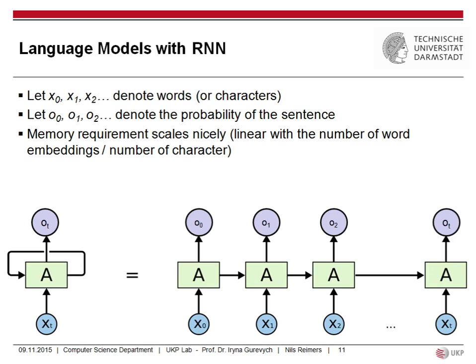When you build a language model with a recurrent neural network, X0, X1, X2 denote the words - or you can also work on characters, which is more typical in this domain. You set as output the probability of how likely the sentence is. At every state you predict how likely the sentence is based on training data. What's nice is that your memory requirement scales linearly with the number of word embeddings or characters, giving a fixed memory requirement - in contrast to n-grams where you need much more memory when storing not only trigrams but also four-grams and five-grams.